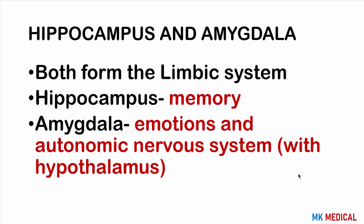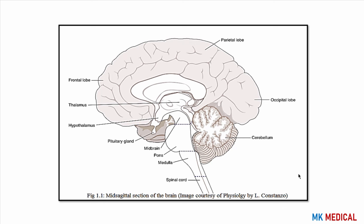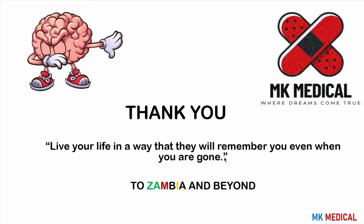The basal ganglia (more correctly called basal nuclei) consist of the caudate nucleus, putamen, and globus pallidus, divided into globus pallidus internus and externus. They receive input from all lobes of the cerebral cortex and project via the thalamus to the frontal cortex to regulate movements. The hippocampus and amygdala form the limbic system — the hippocampus is essential for memory while the amygdala functions in emotions and the autonomic nervous system in conjunction with the hypothalamus. Please subscribe and share this channel.